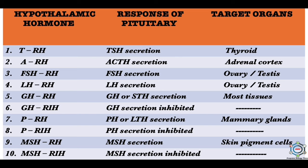Luteinizing hormone releasing hormone activates LH secretion in the pituitary, which activates the ovaries and testes. Growth hormone releasing hormone stimulates growth hormone (somatotropic hormone) secretion, activating most tissues. Growth hormone inhibitory hormone inhibits growth hormone secretion. Prolactin releasing hormone stimulates prolactin secretion, activating the mammary glands, and also acts as an inhibitor. Melanocyte-stimulating hormone releasing hormone stimulates MSH secretion from the pituitary, activating skin pigment cells, and also acts as an inhibitor.